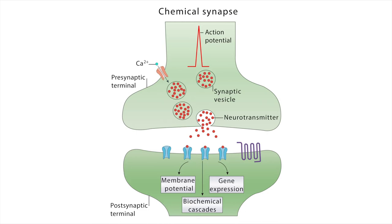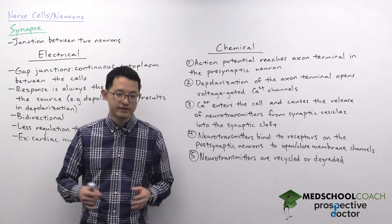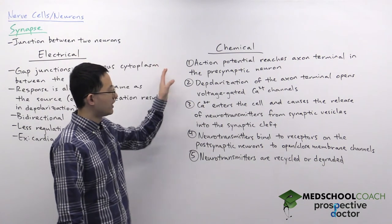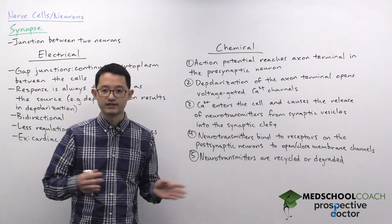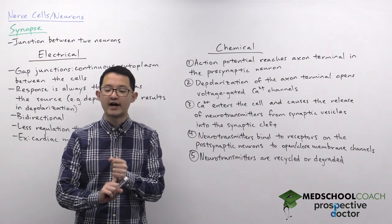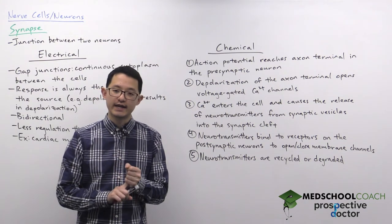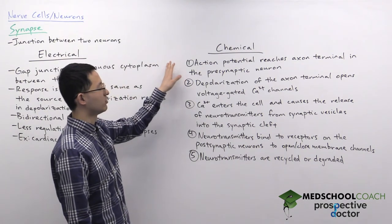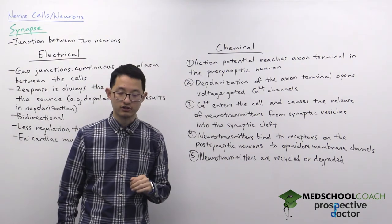When the neurotransmitters bind to the receptors they will cause effects to be elicited, and that can either open or close membrane channels. For signal transmission across a chemical synapse, the first thing that needs to happen is the presynaptic neuron needs to fire an action potential. That action potential will travel down the axon and at some point it will reach the axon terminal.